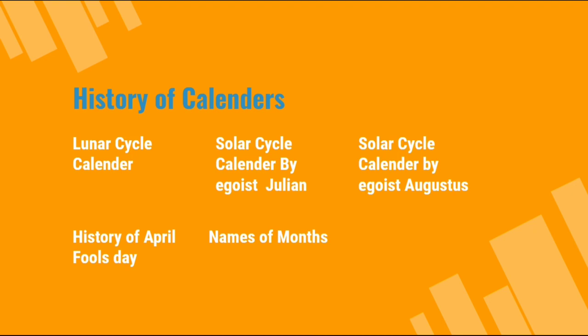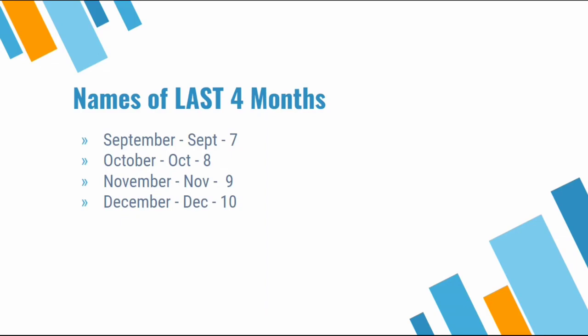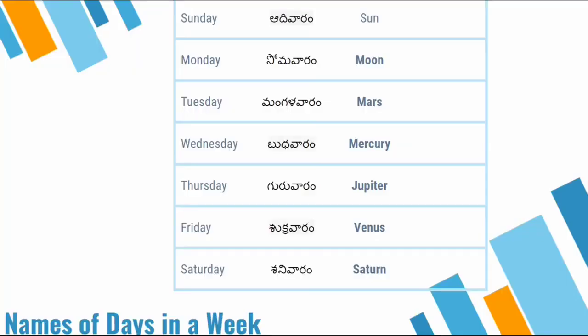The names of the months are named according to gods, and the names of the last four months are named according to numbers — 7, 8, 9, 10 — indicating September, October, November, and December. Coming to the names of days in a week, they are named based on planets. Almost all cultures and religions named the days of the week in the same way.